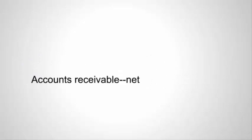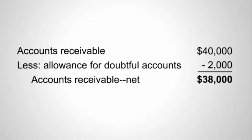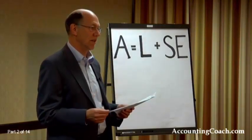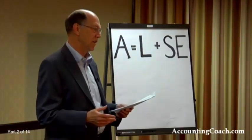We use the phrase 'accounts receivable net' because we should subtract an allowance for any doubtful accounts. For example, we might have $40,000 of accounts receivable but estimate that $2,000 will not be collected. We make that judgment based on factors like a customer being 120 days past due when they should have paid in 30, or another account that's 200 days past due — a good indication we may not collect.